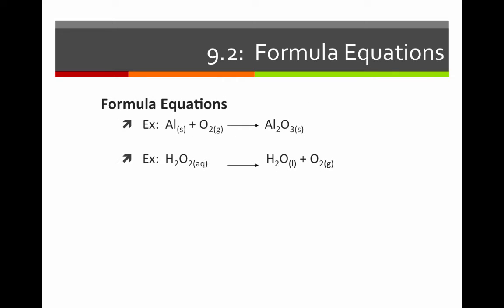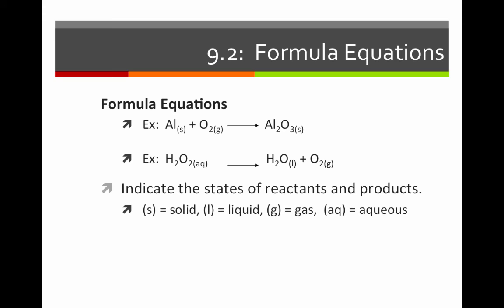Here's two more examples of formula equations. Notice that the first reaction has two reactants and one product, and the second has one reactant and two products. Also notice that we've indicated the states of the reactants and products by using an S for solid, an L for liquid, a G for gas, and an AQ for aqueous. So the top equation would read solid aluminum plus gaseous oxygen yields solid aluminum oxide. The second one, aqueous hydrogen peroxide, yields liquid water plus gaseous oxygen.